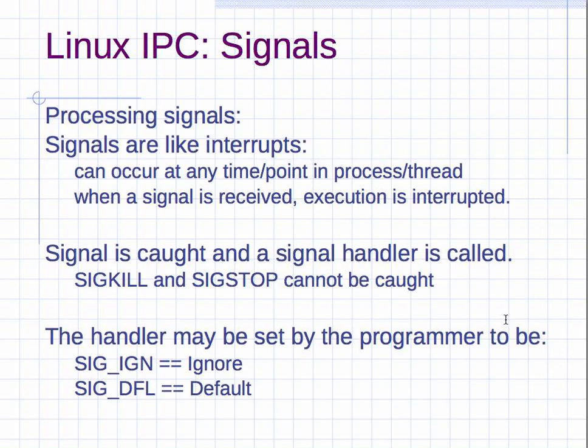What do you do with signals? They're like interrupts—they can occur at any point in the execution of a process. So when a signal is received, the execution of that process is interrupted. If you have a signal handler, the signal is caught and the signal handler gets called.